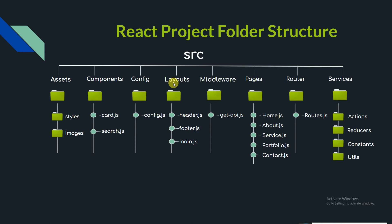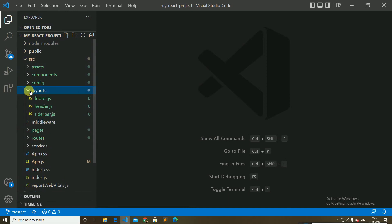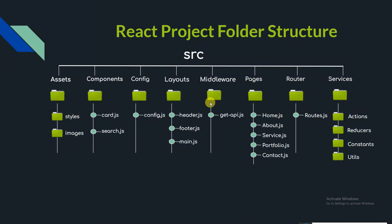The layout folder, as the name suggests, is where we store the header, footer, main, and sidebar components. In the src folder, the layout folder contains all the layout components — header, footer, sidebar — that we need in the project.